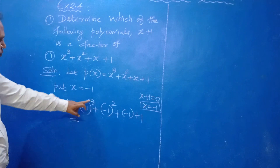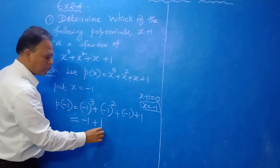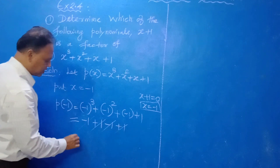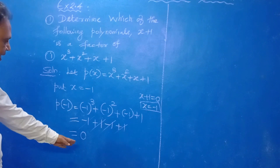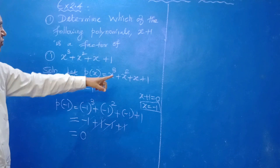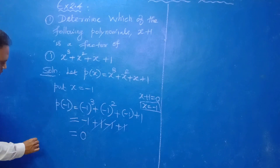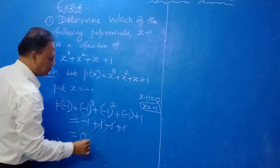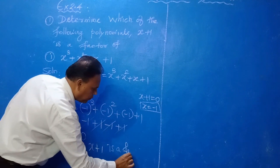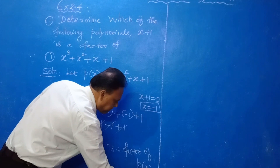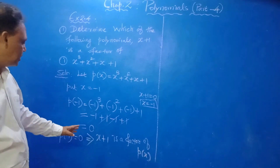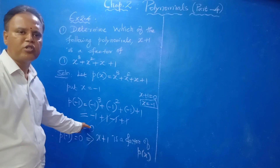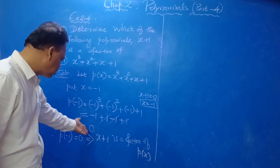P of minus 1 equals (minus 1)³ plus (minus 1)² plus (minus 1) plus 1. Simplifying: minus 1 cube is minus 1, plus minus 1 squared is plus 1, plus minus 1, plus 1. We get minus 1 plus 1 equals 0, and minus 1 plus 1 equals 0 — everything cancels and we get 0. Therefore P of minus 1 equals 0, so by the factor theorem, X plus 1 is a factor of P of X.